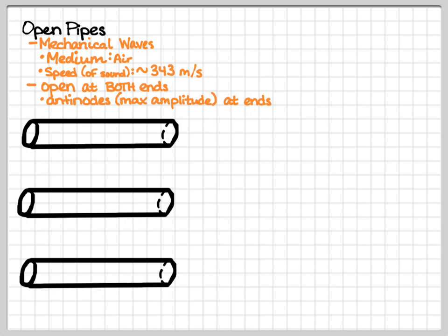To start off with our open pipes, they're open at both ends. It's kind of the opposite of a string. A string has two fixed points at either end, those have to be nodes. Because these pipes are open at both ends, there have to be antinodes at the ends. So those are places of maximum amplitude.